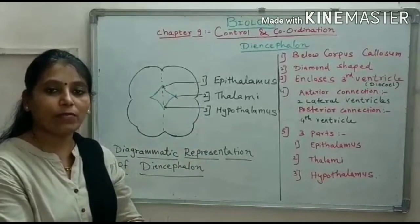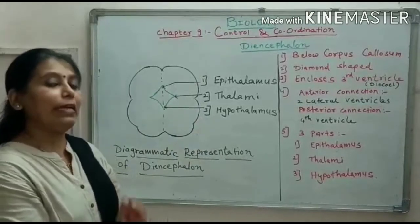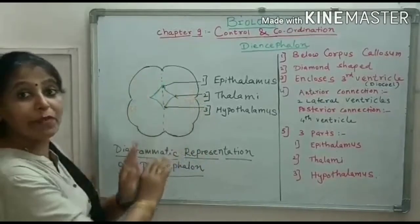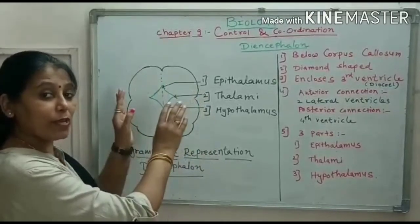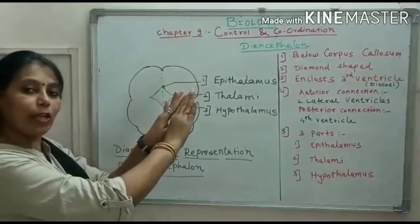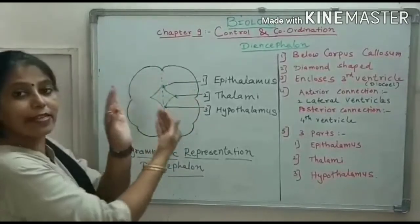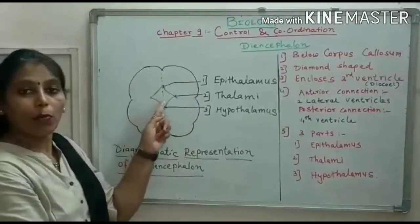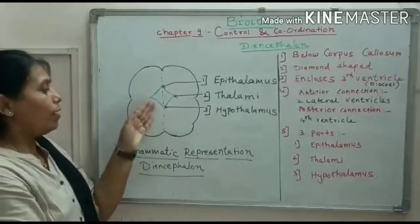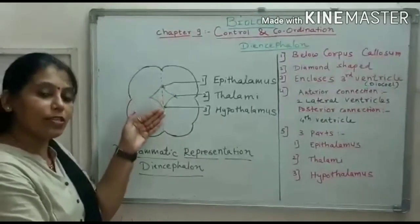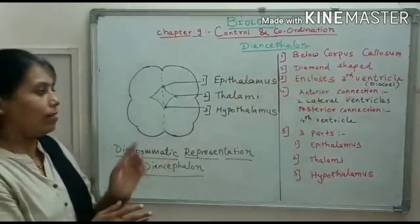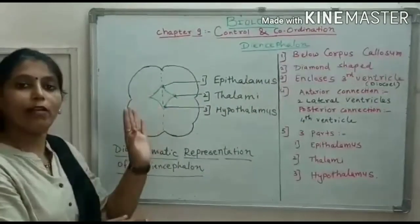What is corpus callosum? Corpus callosum is the big commissure which connects the two cerebral hemispheres, which are parts of the cerebrum. This Diencephalon is present just below the corpus callosum and above the midbrain — the midbrain is coming somewhere here. It is a diamond-shaped structure.